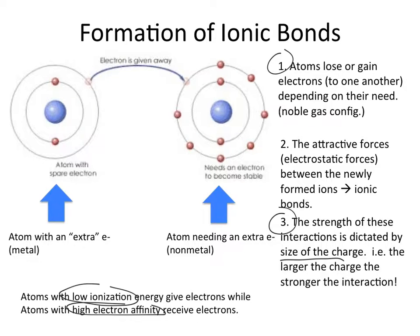In order for it to give away electrons, it needs to have a low ionization energy. That needs to be an easy process, and elements that need to accept electrons or want electrons in order to have their octet need to have a high electron affinity in order to facilitate that type of transfer.